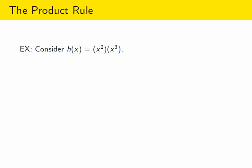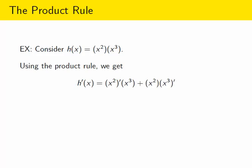Let's illustrate that it works, at least in the example we've been using. If you start with the function obtained by multiplying x squared by x cubed and you use the product rule to calculate the derivative, you take the derivative of x squared and leave x cubed alone, then add to that what you get from leaving x squared alone and taking the derivative of x cubed. This gives you the derivative of the first times the second, plus the first times the derivative of the second. Calculating those derivatives: the derivative of x squared is 2x and the derivative of x cubed is 3x squared. Simplifying, each term can be written as a coefficient times x to the fourth, so they are like terms that combine to give 5x to the fourth — which was exactly the right answer we got by simplifying h first and then taking the derivative.